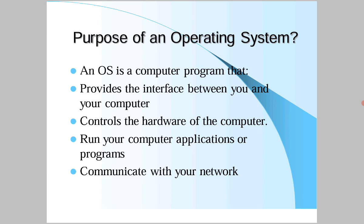What is an operating system, and what are the purpose, functionalities, and features of an operating system? An operating system is a computer program - a set of computer programs or applications that provides the interface between the user and the computer. The operating system acts as a mediator between the user and the computer.